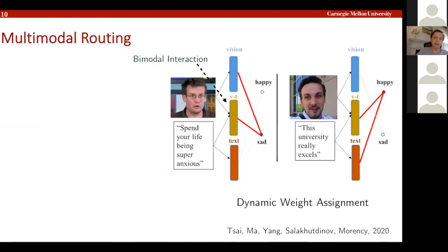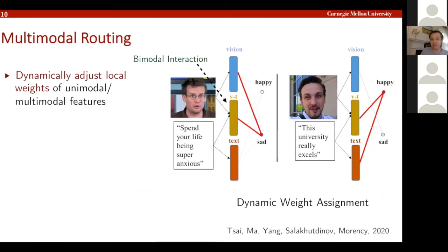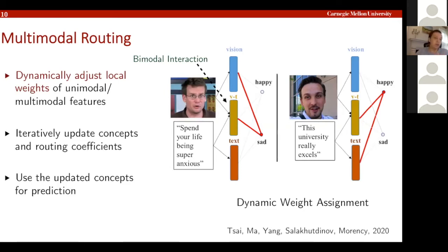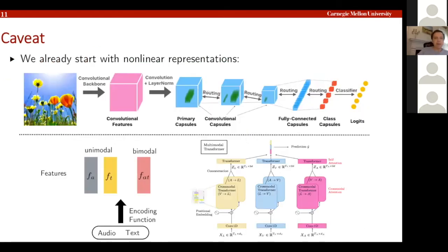One interesting application is multi-modal routing. For example, with videos and language you can have visual, textual, and bimodal representations, then build capsules representing concepts like 'happy' or 'sad.' These interpretable routing architectures tell you, given an instance, which low-level features get routed to high-level concepts — giving you more information about interpretability of what's happening with your data, and then you can use these concepts for making predictions.